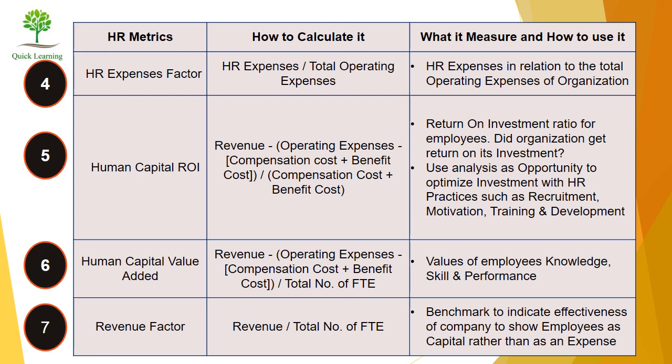Fifth, Human Capital Return on Investment. Its formula is: (Revenue minus operating expense minus (compensation cost plus benefit cost)) divided by (compensation cost plus benefit cost). This measures the return on investment ratio for employees — whether the organization is getting returns from its employees or not.